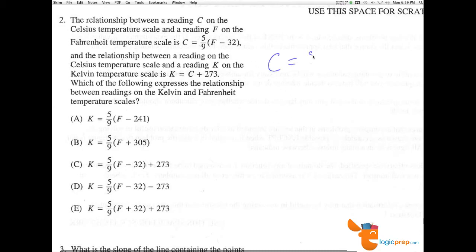So C equals five-ninths times the Fahrenheit degree minus 32. And the relationship between a reading on the Celsius scale and a reading K on the Kelvin temperature scale is K equals C plus 273. Which of the following expresses the relationship between readings on the Kelvin and Fahrenheit temperature scales?